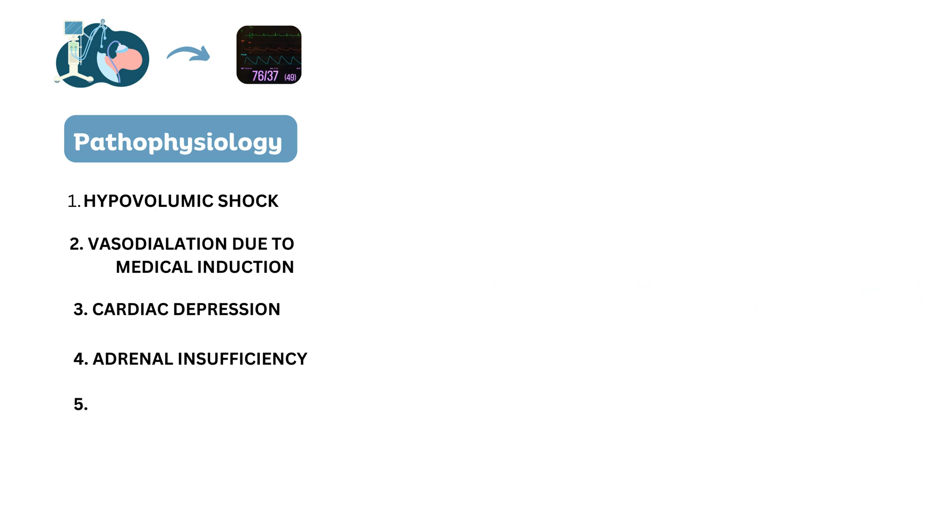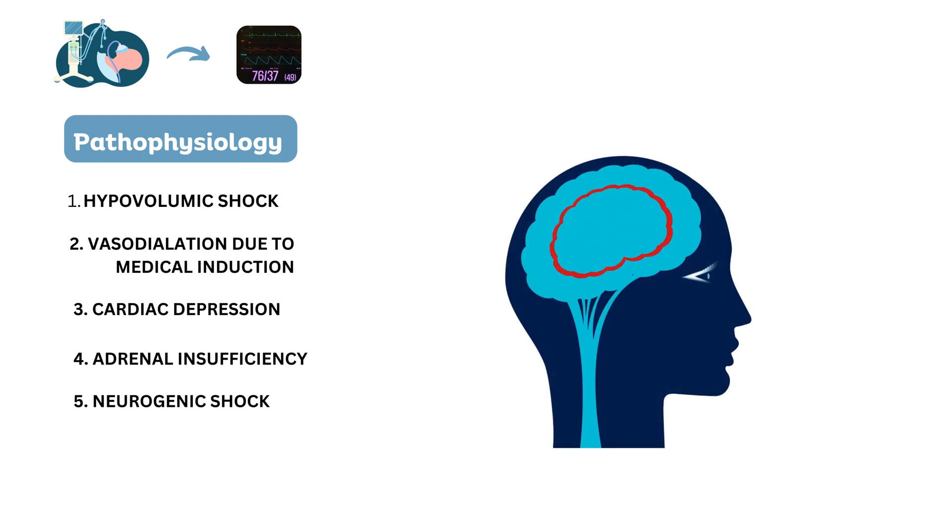Last but not least, neurogenic shock. In rare cases, a traumatic or neurologic injury can result in neurogenic shock, characterized by widespread vasodilation and hypotension.